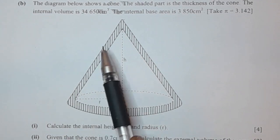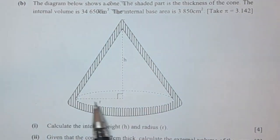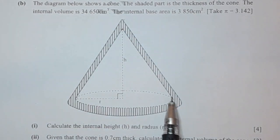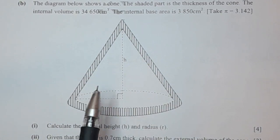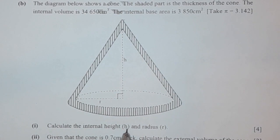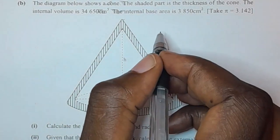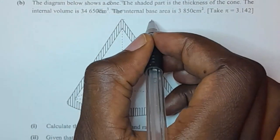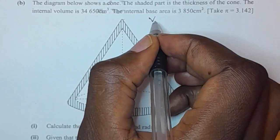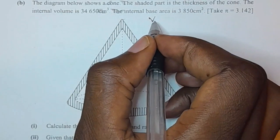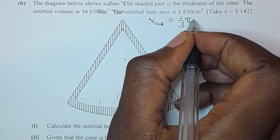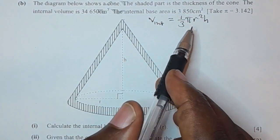The information we've been given is the internal volume of a cone and also the internal base area. To find the height and the radius, since we've been given the volume, we're going to write the formula for the volume of a cone. So the internal volume is equal to one-third pi r squared h. This is the formula for the volume of a cone.